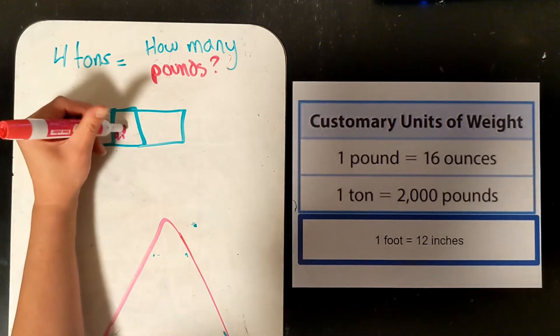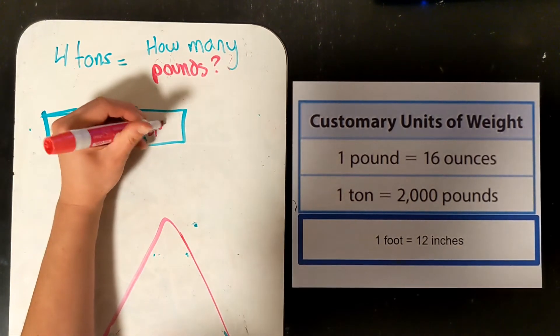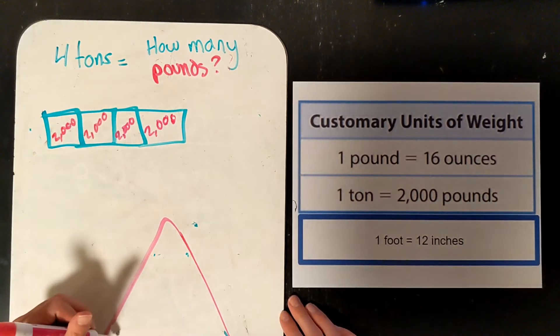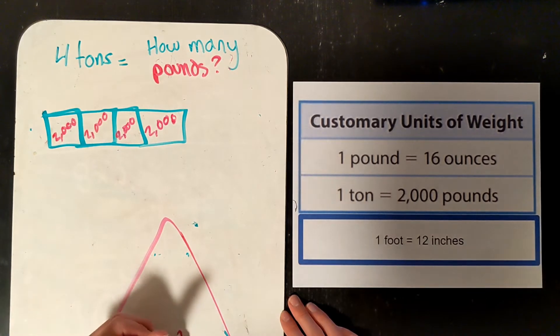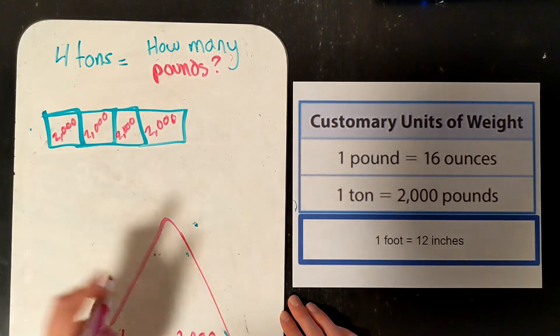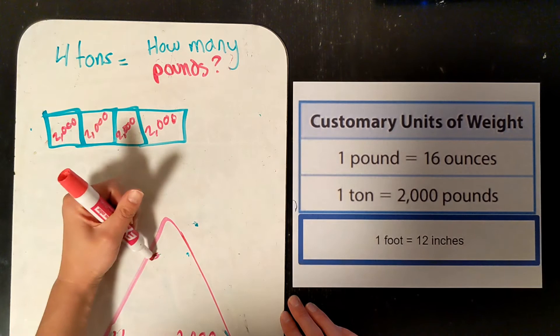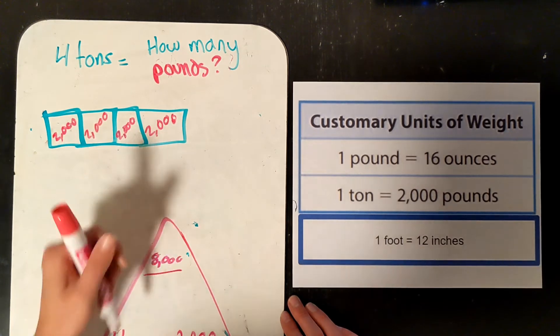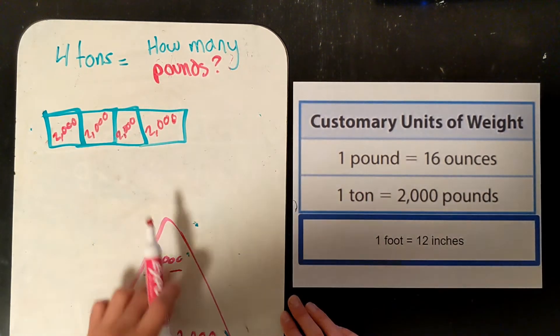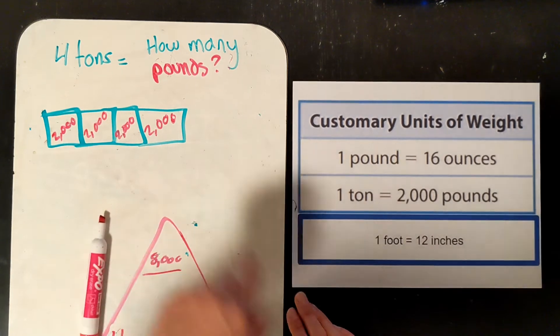So we are going to do 4 tons, 2,000 pounds in each one. So your average car weighs 8,000 pounds. And that is our label. 8,000 pounds.